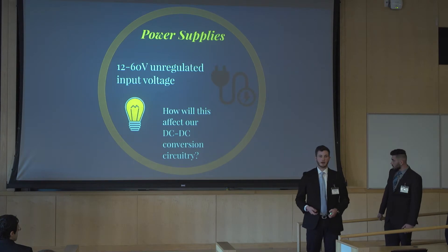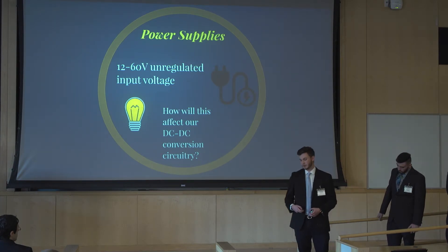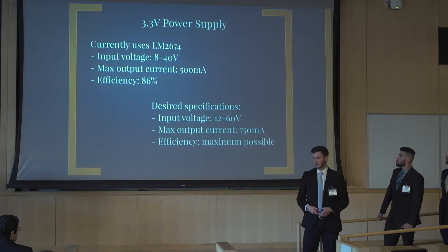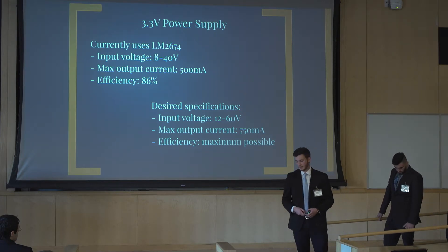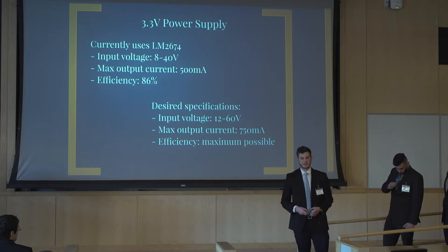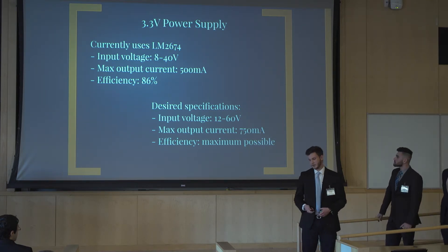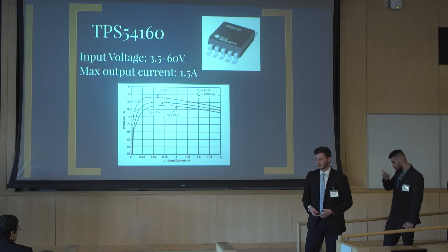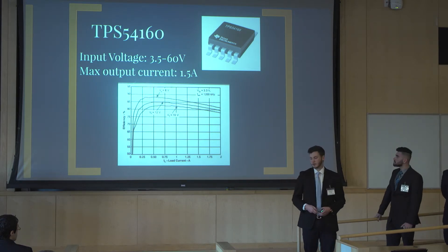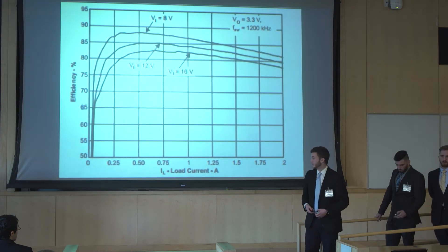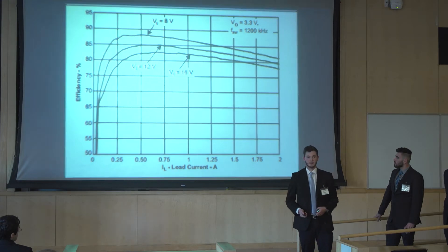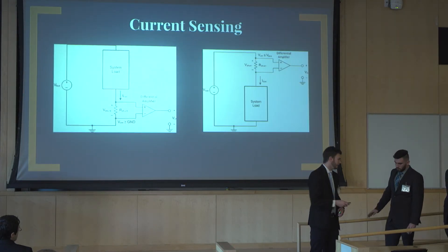In addition, we needed to update all of our power supplies to regulate a higher input voltage, specifically 12 to 60 volts of unregulated input voltage. Currently, the 3.3-volt power supply on the current design can only regulate up to 40 volts. We want to bump that up to 60 volts while maintaining maximum efficiency. Through research of active market regulators and implementation, our new 3.3-volt power supply design will be able to regulate the 60 volts we need, and as you can see, has an efficiency of about 85%, which is very comparable to the current design. I'll now turn this over to Evan to discuss the current sensing portion of the project.